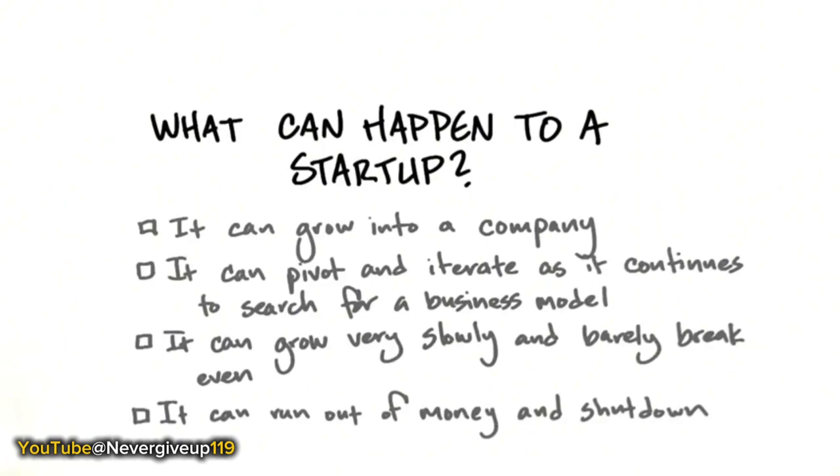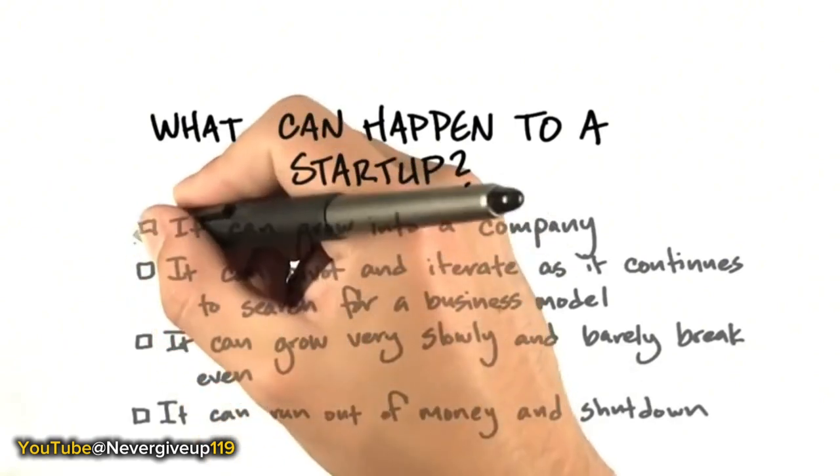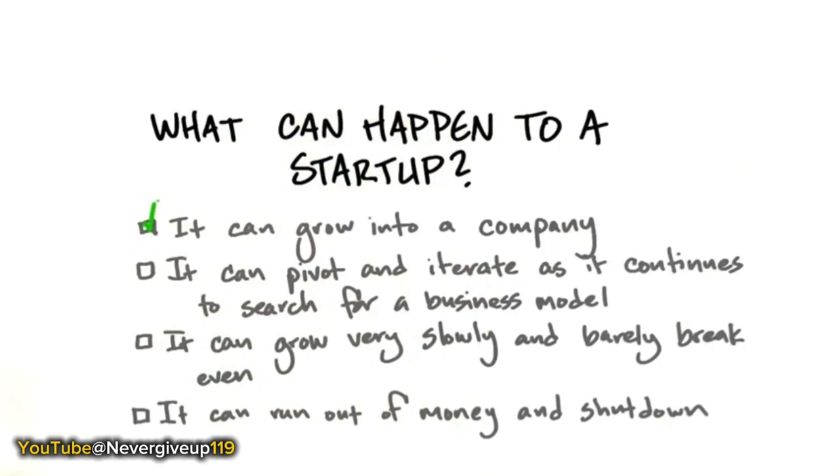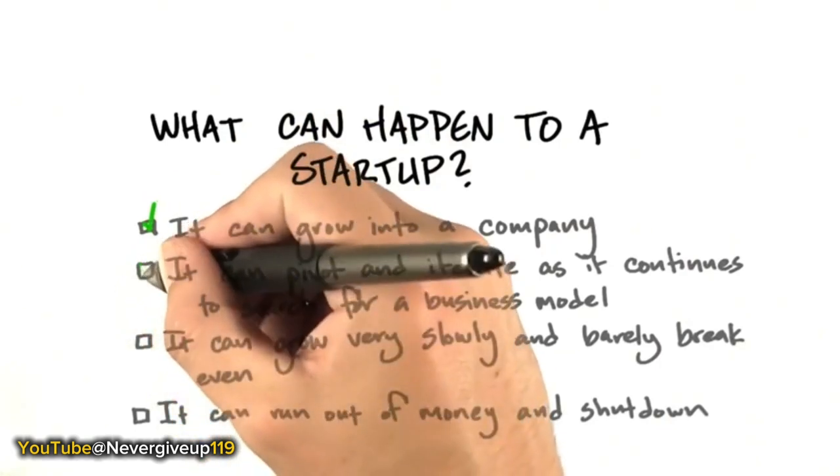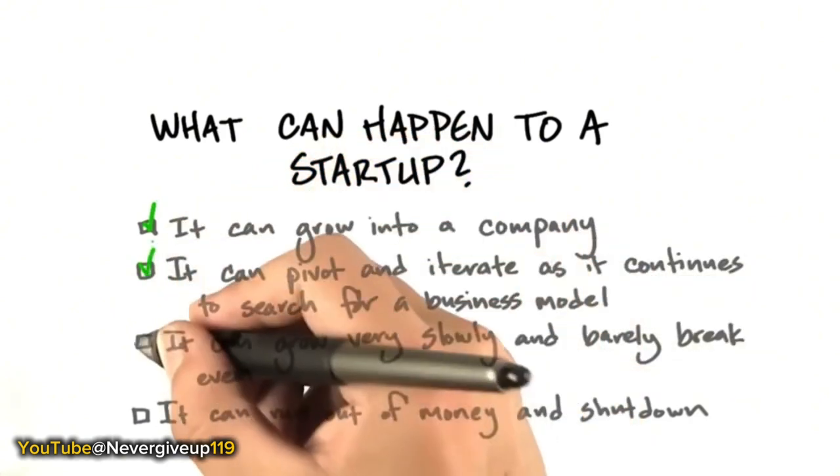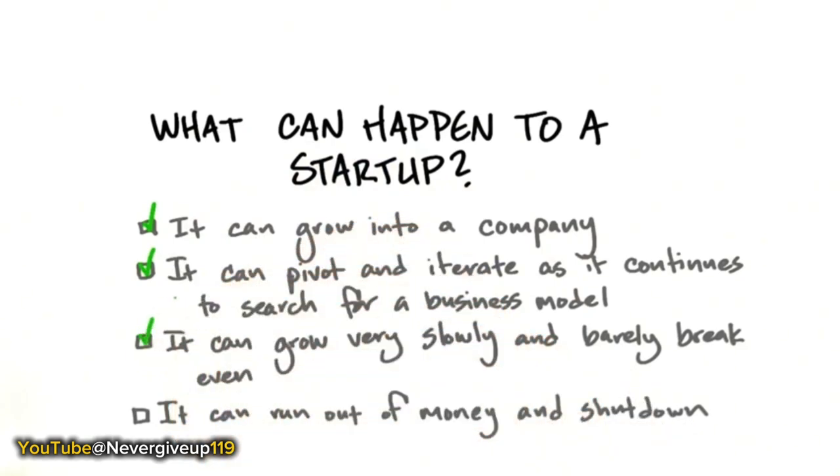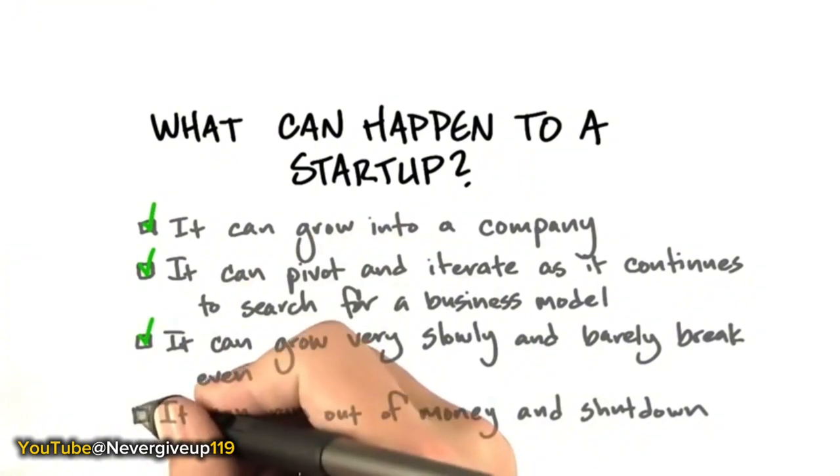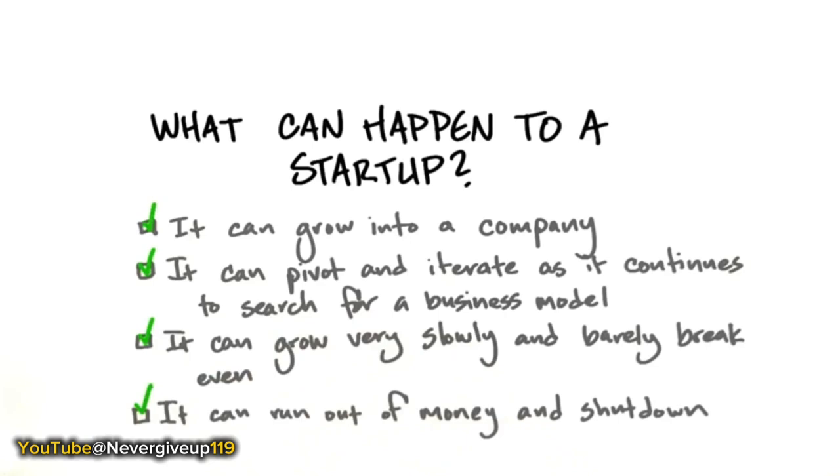So what can happen to a startup? The best thing that can happen is that it can grow into a company and hopefully a large company after you've found a repeatable and scalable business model. Or two, you could still be pivoting and iterating as you continue to search for a business model. Or three, you could have found a business model, but maybe one that isn't explosive growth, but you could be growing slowly and barely breaking even. Or four, maybe you never found a business model that can make money and you ran out of money and time and you shut your company down. So the answer is all of the above.